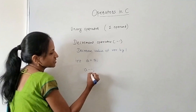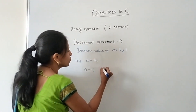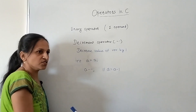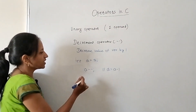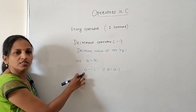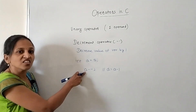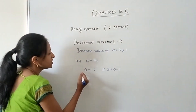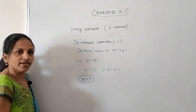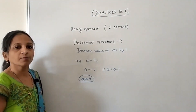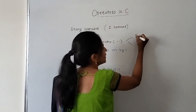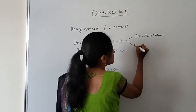The decrement operator (--) is also a unary operator. The meaning of a-- is a = a - 1. Initially if a = 5, after the decrement operator executes, the value of a becomes 4. This is the decrement operator. Again there are two categories: pre-decrement (--a) and post-decrement (a--).